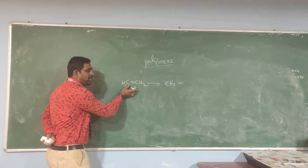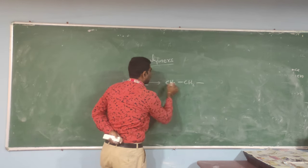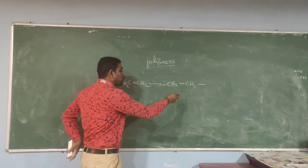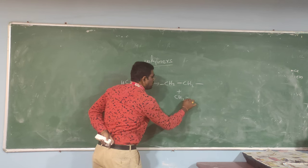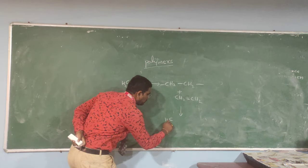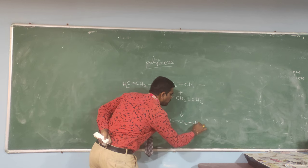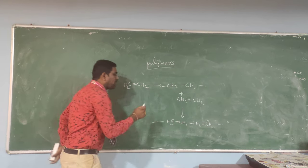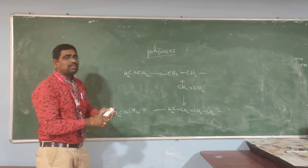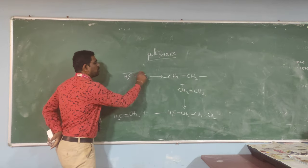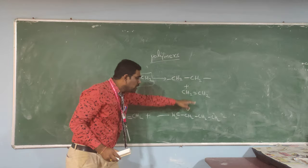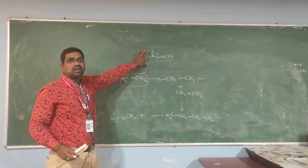The double bond will break and convert to a single bond. So a small unit is converted to a large unit. We add one more ethene — CH2 double bond CH2 — so four carbons attach. We keep adding monomers like this. Once you observe this reaction: monomer converted to polymer — monomer being a small unit converted to a large unit — this is called a polymer.